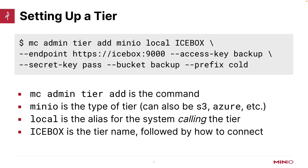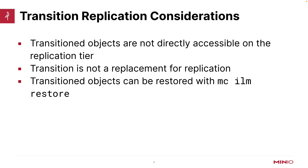So now my local MinIO deployment can use this tier for all of its transition lifecycle management rules. When I transition an object, the transitioned objects are not going to be directly accessible on the transition tier. A transitioned object is only accessible from its original tier. This should also be telling you that transition is not a replacement for replication — they serve different purposes. And once you have transitioned an object, if you need to restore it back to the original tier, you can restore it with MC ILM restore. So keep in mind that when you transition an object, it's no longer accessible in replication.